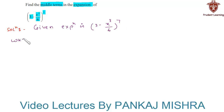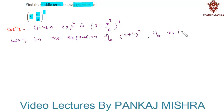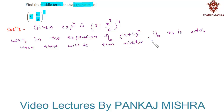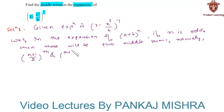We know that in the expansion of (a plus b) whole raise to n, if n is odd, then there will be two middle terms, namely the (n plus 1) by 2th term and the (n plus 3) by 2th term. Here n is equal to 7, which is an odd number, so we will have two middle terms.